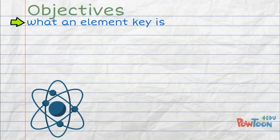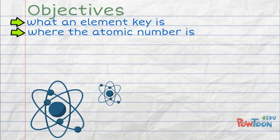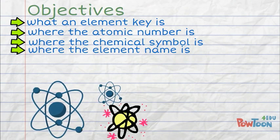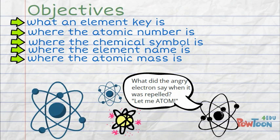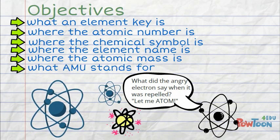Did you get your objectives for your notes? What an element key is, where the atomic number is, where the chemical symbol is, where the element name is, where the atomic mass is, and what AMU stands for.